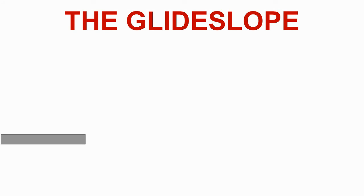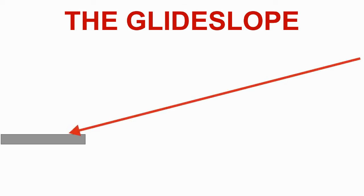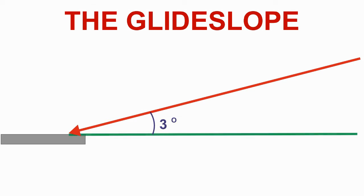The ILS system will also provide precision guidance for the vertical descent onto the runway. A constant angle descent is provided, which is called the glide slope. A typical glide slope will be a three-degree angle, but there can be variances due to obstacles on the approach, requiring a slightly higher altitude at a defined point. An example would be London City Airport, where the glide slope is set at 5.5 degrees. However, for auto-land requirements, the glide slope will be at, or around, 3 degrees.